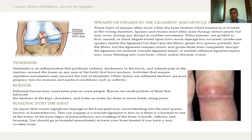The most common problem in younger adults is ligament sprains. These injuries occur when the knee receives a blunt injury in the wrong direction. There are three grades of sprains — grade 1, grade 2, and grade 3 — which can be decided only based on a clinical examination, and appropriate treatment needs to be done. The most common sprains are generally grade 1, wherein ice packing and bracing should suffice.